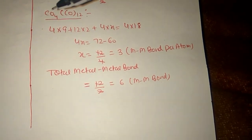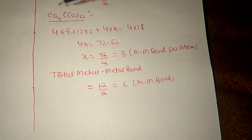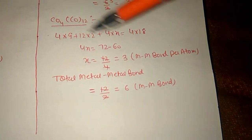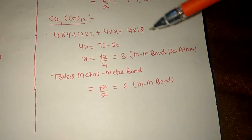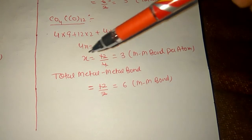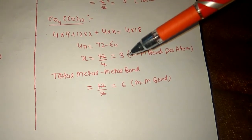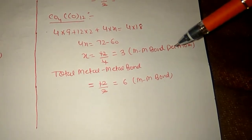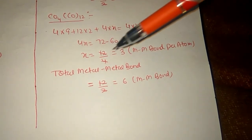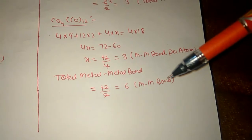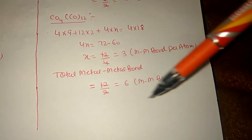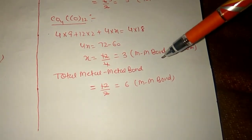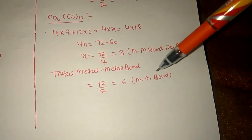For Co₄(CO)₁₂: cobalt has 9 valence electrons and atomic number 27. So: 4×9 + 12×2 + 4X = 4×18, giving 36 + 24 + 4X = 72, therefore 4X = 12, and X = 3 metal-metal bonds per atom. To find the total number of metal-metal bonds, divide 12 by 2, giving 6 total metal-metal bonds in this compound. Using this formula, we can find both the number of metal-metal bonds per atom and the total number of metal-metal bonds in a structure.